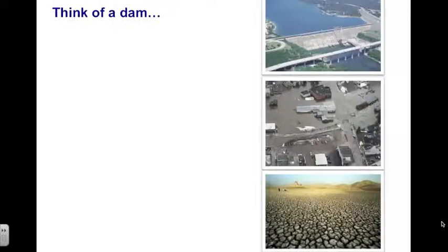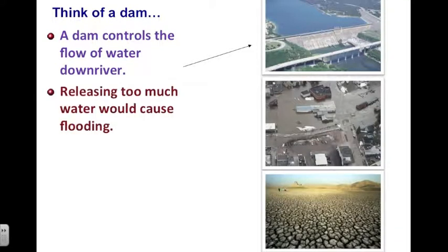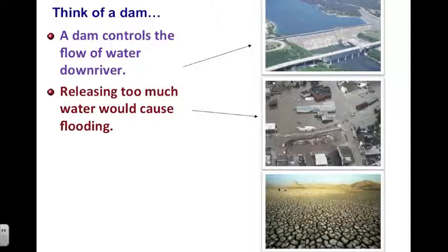Think of a dam. What is the function of a dam? It controls some body of water. What would happen if we released too much water? If the dam allows too much water to flow through, you could have flooding — too much water in an area, which would be undesirable.